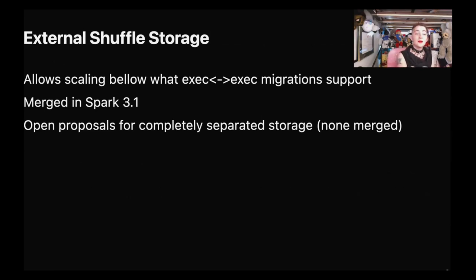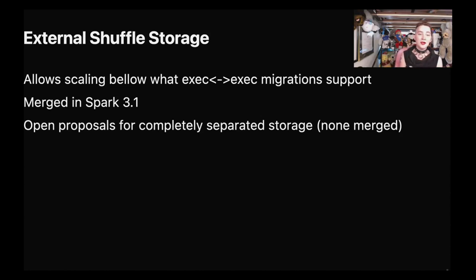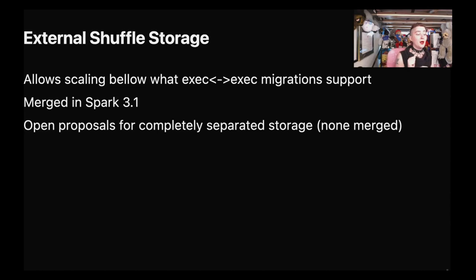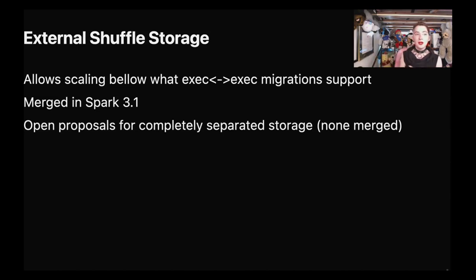We added external shuffle storage, which allows scaling beyond what executor-to-executor migrations support. With executor-to-executor migrations, we can only scale down to the point where we still have enough local disk available for the data. There are alternative proposals for doing more on top of this. If you have a lot of data but, say, your data scientist goes home at the end of the night, it probably makes sense to put that data in some kind of external storage while they're taking a break from their job.